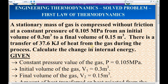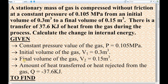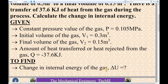Now I will list out the given conditions from the question. The constant pressure value of the gas is 0.105 megapascal, taken as P. The initial volume of the gas is 0.3 meter cube, taken as V1. The final volume of the gas is 0.15 meter cube, taken as V2. The amount of heat transferred from the gas is minus 37.6 kilojoule, taken as Q. The negative sign indicates that the heat is being rejected or transferred from the gas.